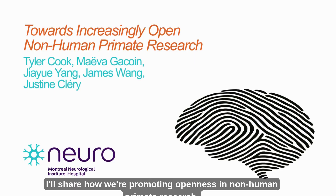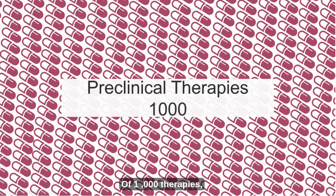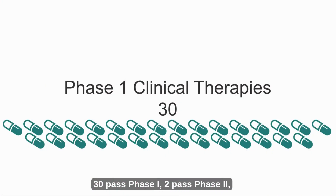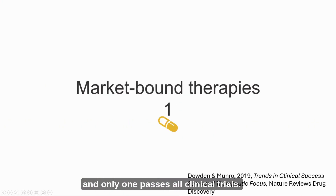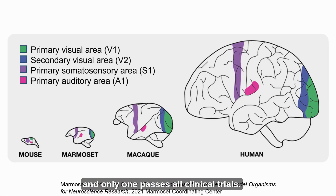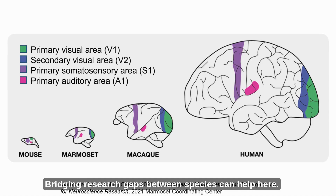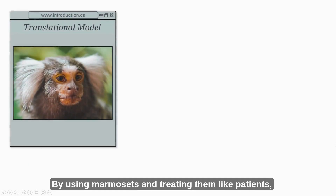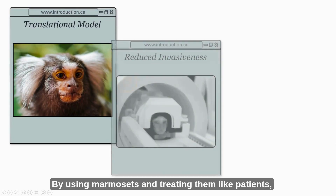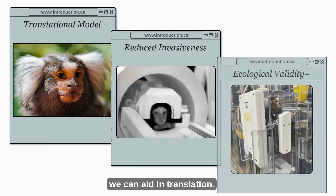Today I'll share how we're promoting openness in non-human primate research. Of a thousand therapies, 30 pass phase 1, 2 pass phase 2, and only 1 passes all clinical trials. Bridging research gaps between species can help here. By using marmosets and treating them like patients, we can aid in translation.